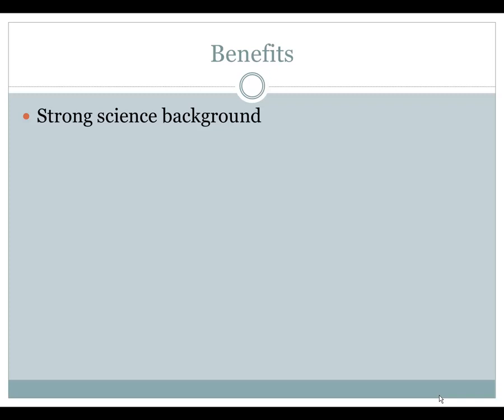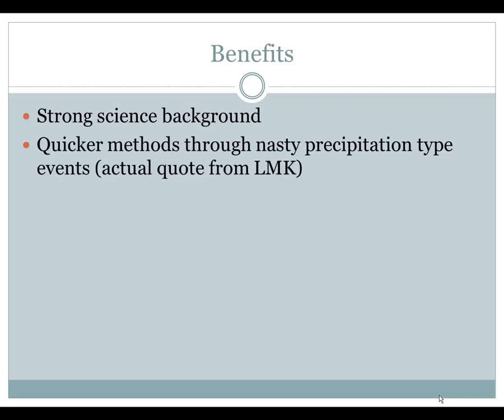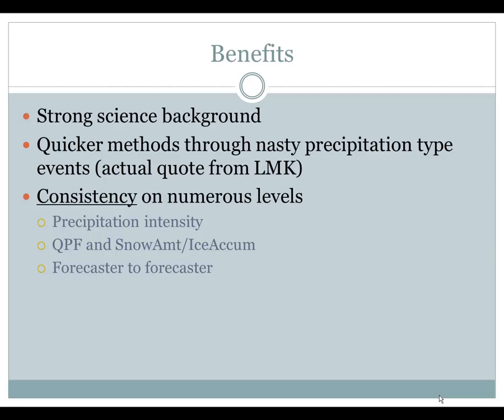There are many benefits to this methodology. The first is a strong science background, including a top-down approach and a nice divvying up of QPF to get your snow and ice. The methods are quicker to get you through nasty precipitation type events — this was an actual quote from a forecaster at Louisville. There's also consistency on numerous levels: for precipitation intensity from shift to shift, office to office, and forecaster to forecaster — in summary, internal meteorological consistency.